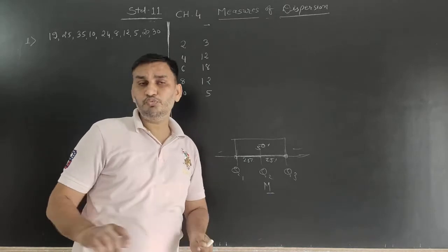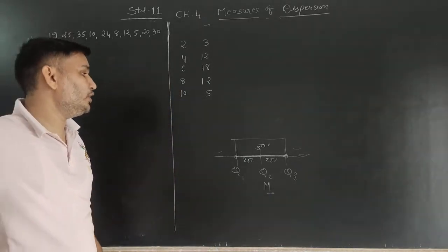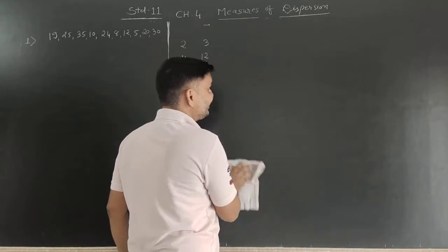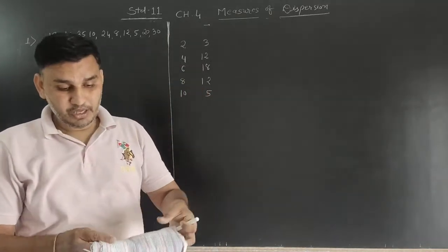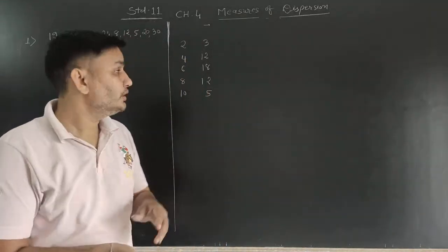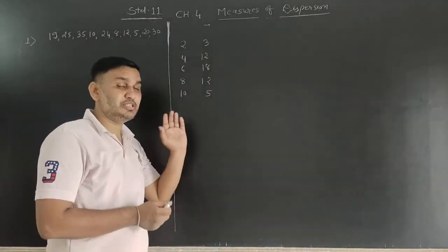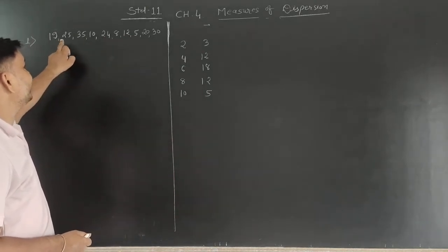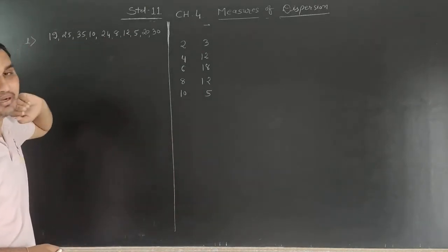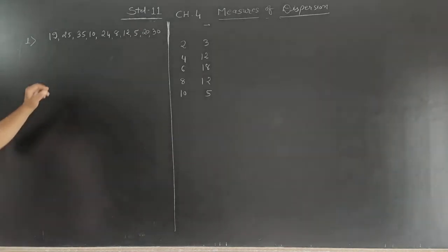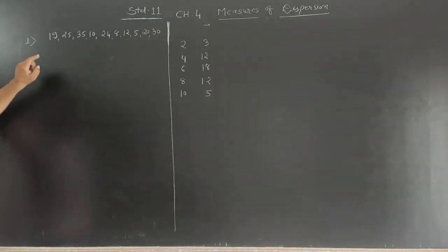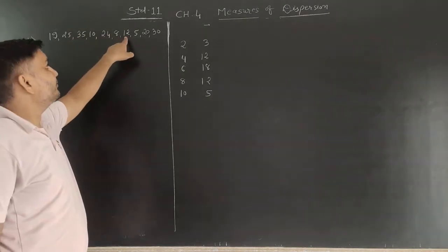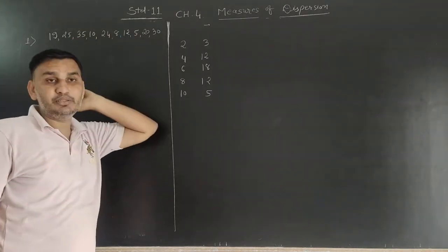To find the quartile deviations and coefficient of quartile deviations, we will see examples of ungrouped data or discrete frequency distribution. The observations given are: 19, 25, 35, 18, 24, 8, 12, 5, 20, and 30.